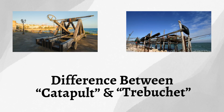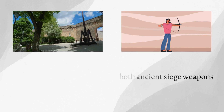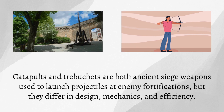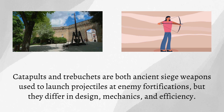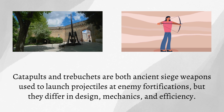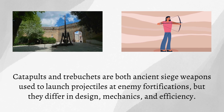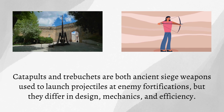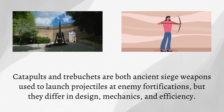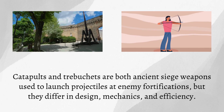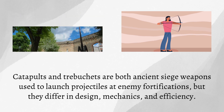Difference between catapult and trebuchet. Catapults and trebuchets are both ancient siege weapons used to launch projectiles at enemy fortifications, but they differ in design, mechanics, and efficiency.